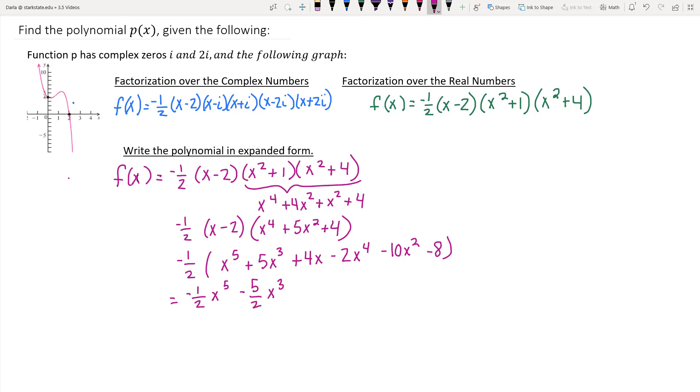And then negative 1 half times 4 is going to give us negative 2x. And negative times a negative is a positive. And then half times 2 is 1. So 1x to the fourth, I'll just write the x to the fourth. And negative 1 half times negative 10 is a positive 5x to the second. And negative 1 half times negative 8 is a positive 4.